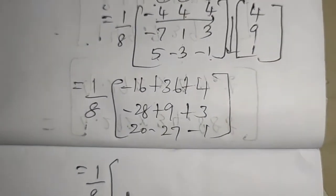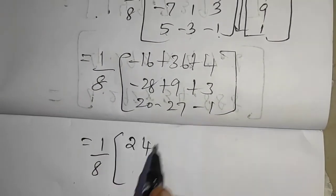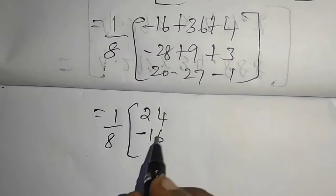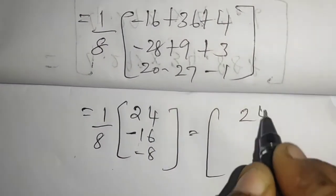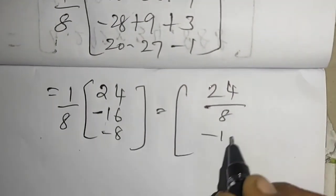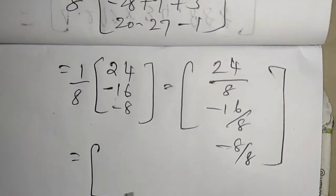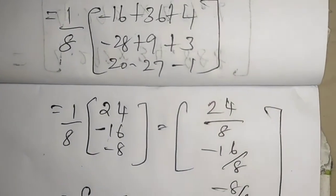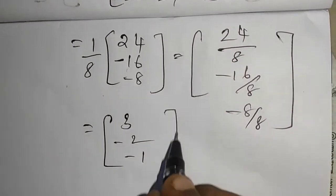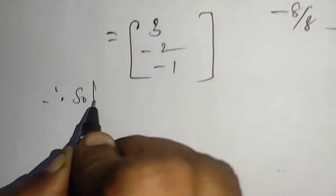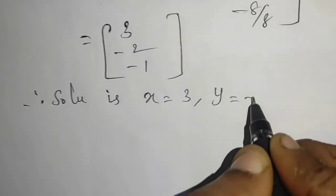So 1 by 8 into: minus 16 plus 40 is 24, minus 28 plus 12 is minus 16, 20 minus 28 is minus 8. Divide all by 8: 24 divided by 8 is 3, minus 16 by 8 is minus 2, minus 8 by 8 is minus 1. Therefore the solution is x equals 3, y equals minus 2, z equals minus 1.